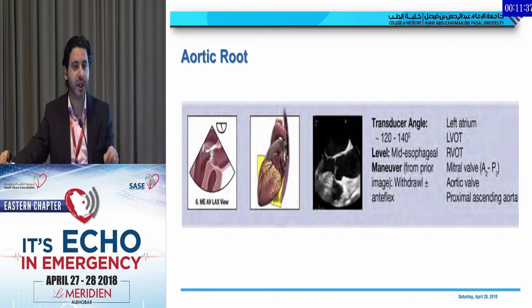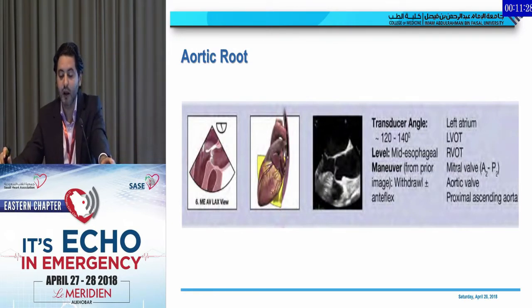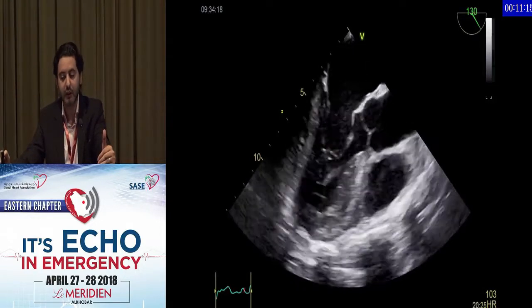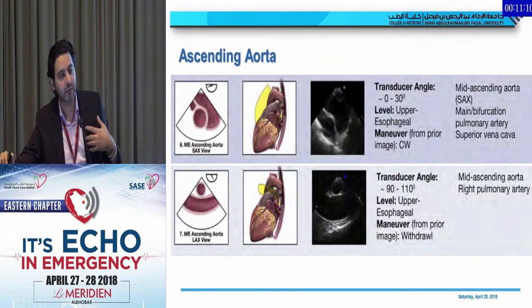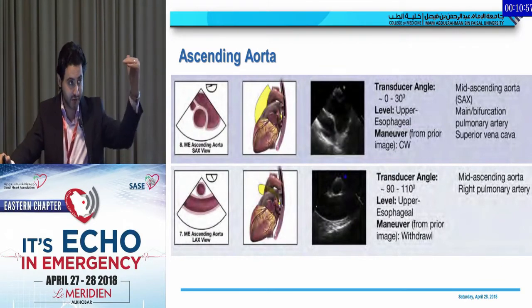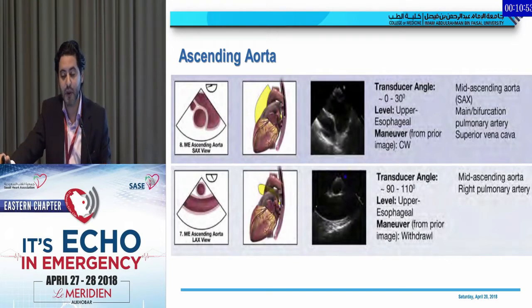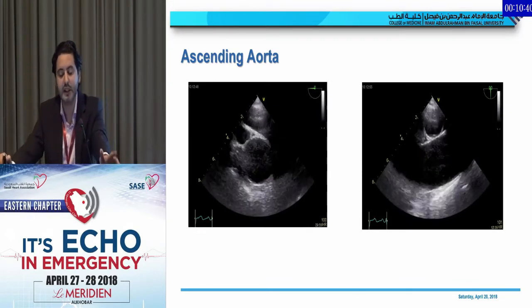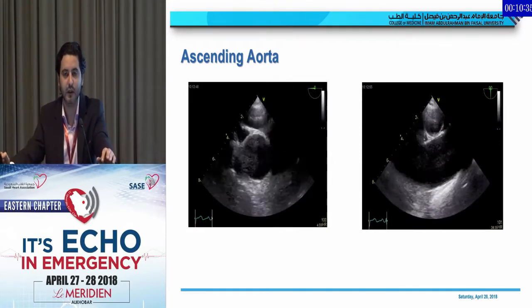For the aortic root, the best view is mid-esophageal at an angle of 120 to 140 degrees. For the ascending aorta, it is upper esophageal — angle zero for short axis, 90 for long axis. I keep the ascending aorta and arch until the end during TEE because it's not comfortable for the patient. Sometimes it's tricky for the aortic arch and ascending aorta because the trachea comes in between. This is an example of a normal ascending aorta: short axis on the left, long axis on the right.